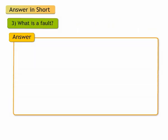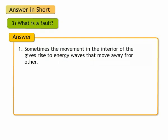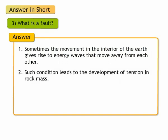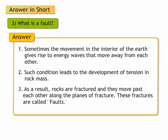3. What is a fault? Answer. Sometimes, the movement in the interior of the earth gives rise to energy waves that move away from each other. Such condition leads to the development of tension in rock mass. As a result, rocks are fractured and they move past each other along the planes of fracture. These fractures are called faults.